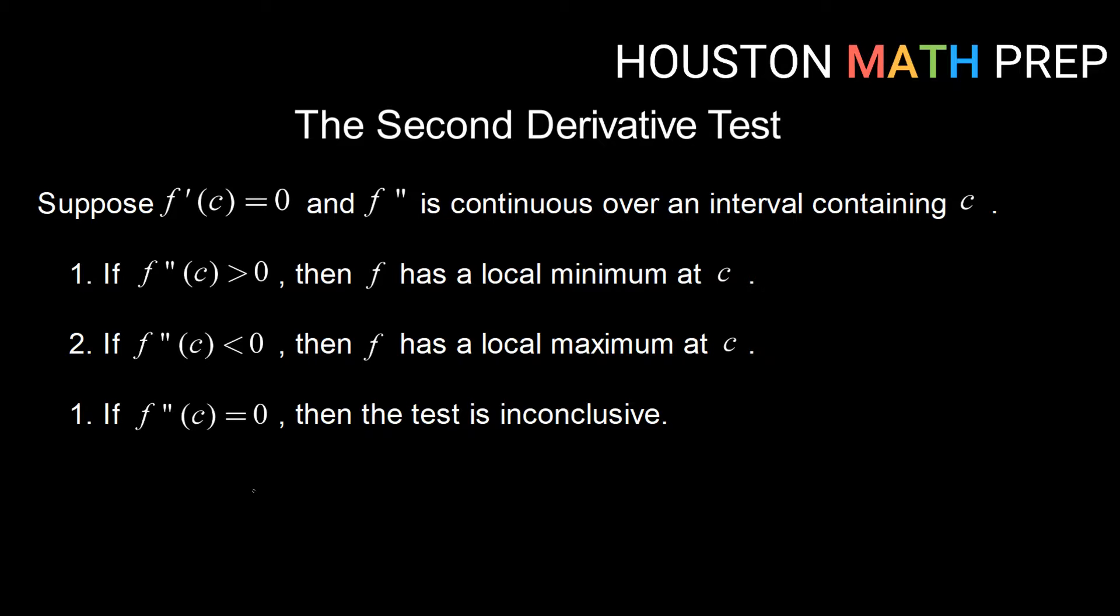This is a test that allows us to use information about the second derivative to find local extrema for our function. So suppose we know that f prime of c equals zero and that f double prime is continuous over some interval containing that c. So essentially we have a critical point of the first derivative that is equal to zero and we know that the second derivative is continuous around that interval.